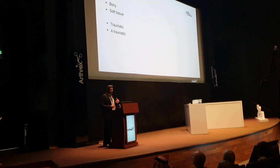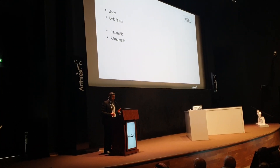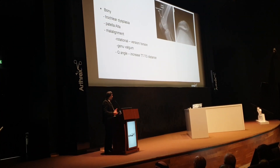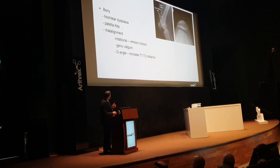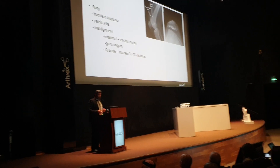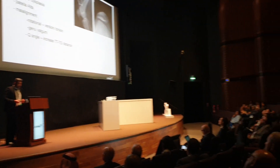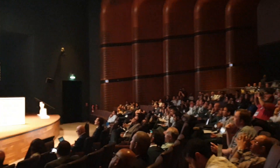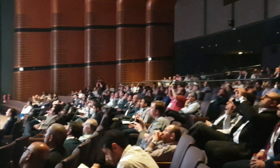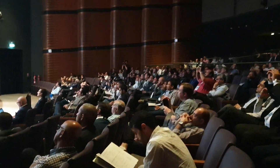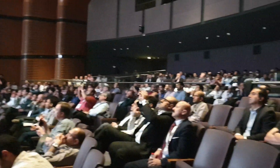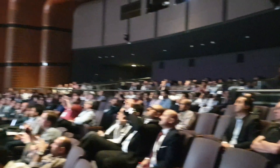The etiology could be bony or soft tissue, and could be traumatic or atraumatic. Regarding bony abnormality, we have just discussed trochlear dysplasia, the alpha angle, torsional abnormality, and also genu valgum with abnormal TT-TG.